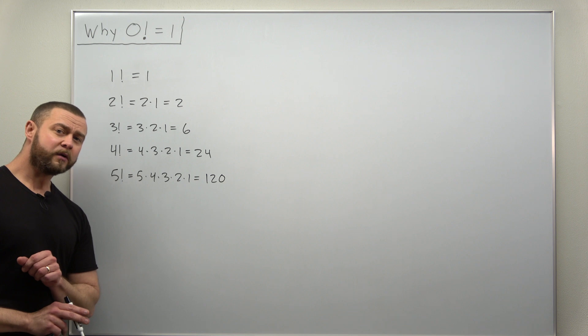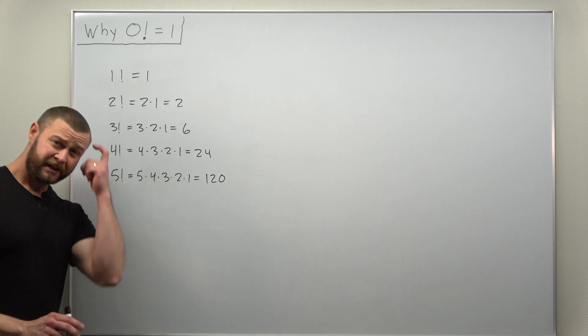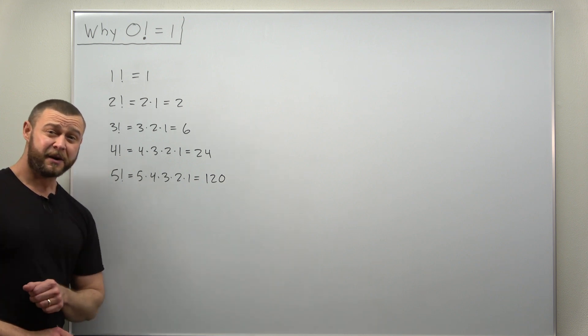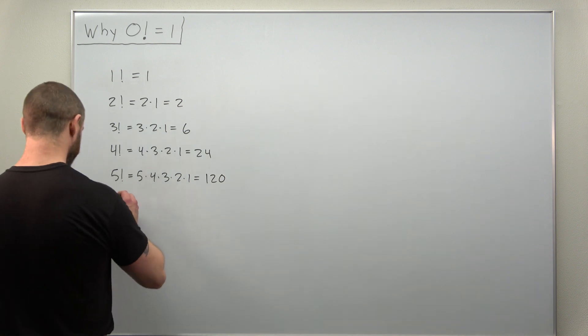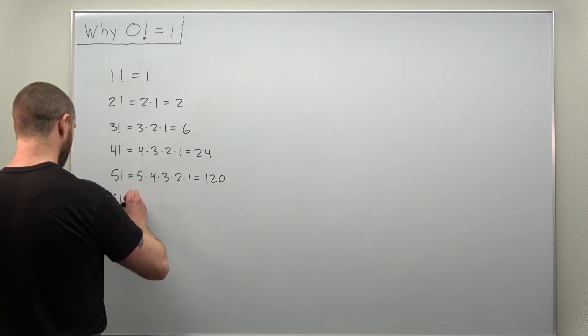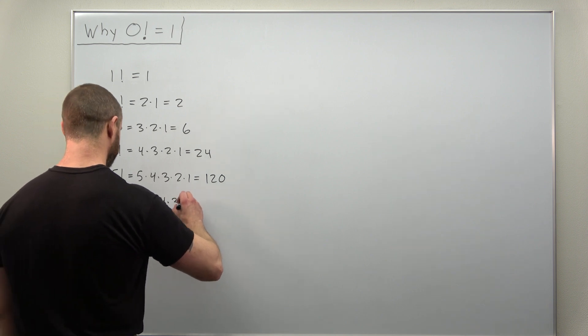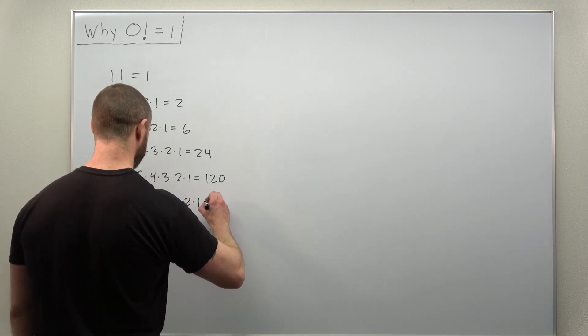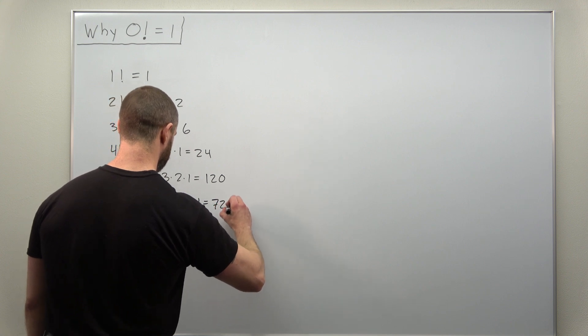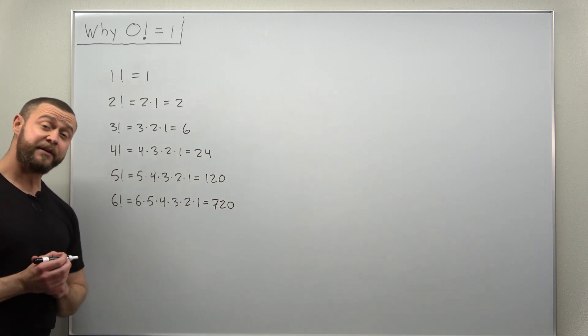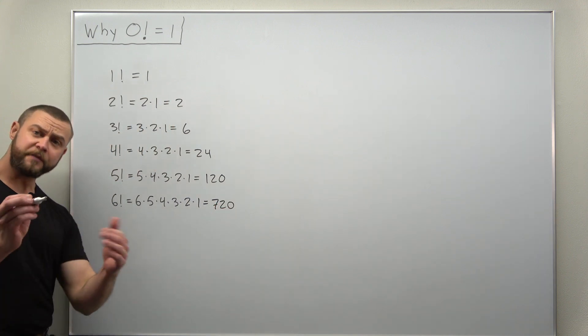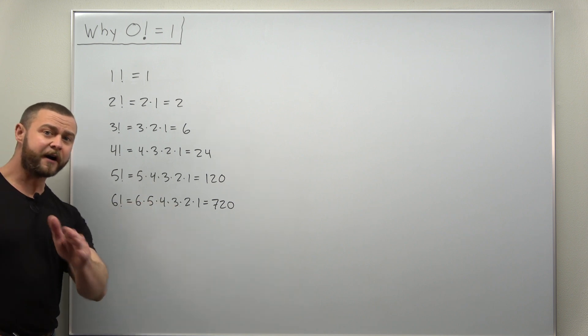Let's go one more value. Six factorial - because beyond that the numbers get too big for me to multiply. So six factorial: six times five times four times three times two times one. That comes out to seven hundred and twenty. So the factorial values grow very quickly.